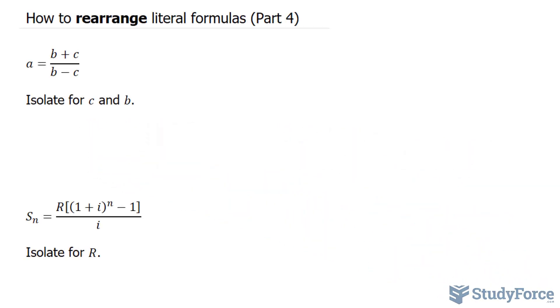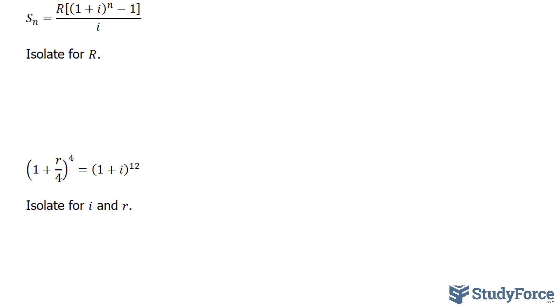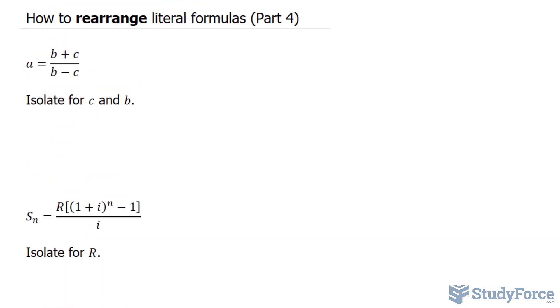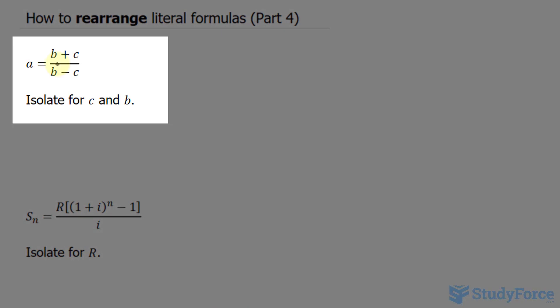In part 4 of this series, I'll show you how to rearrange four more equations for different variables. Starting with the first equation, we have a is equal to b plus c over b minus c. They want us to isolate for c and b.